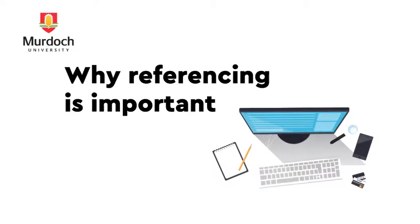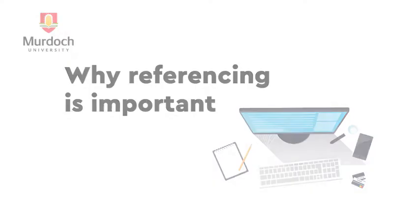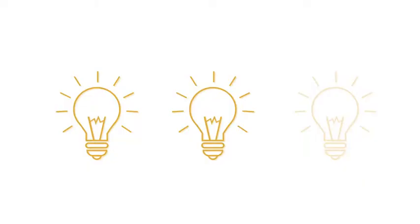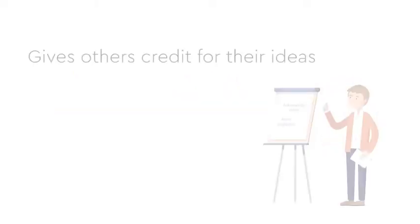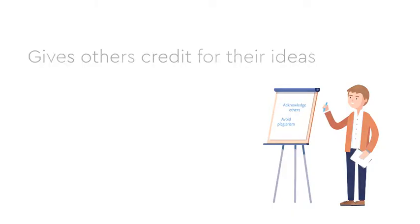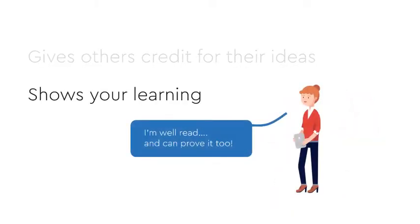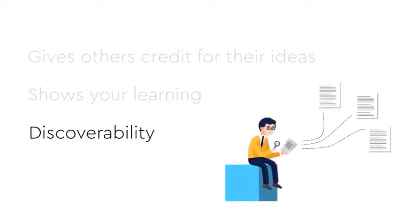Referencing is a consistent method of acknowledging another person's ideas which you have used in your own writing. There are three reasons why this is so important. It gives others credit for their ideas. It shows your work or demonstrates your understanding of the topic. And it helps with discoverability.